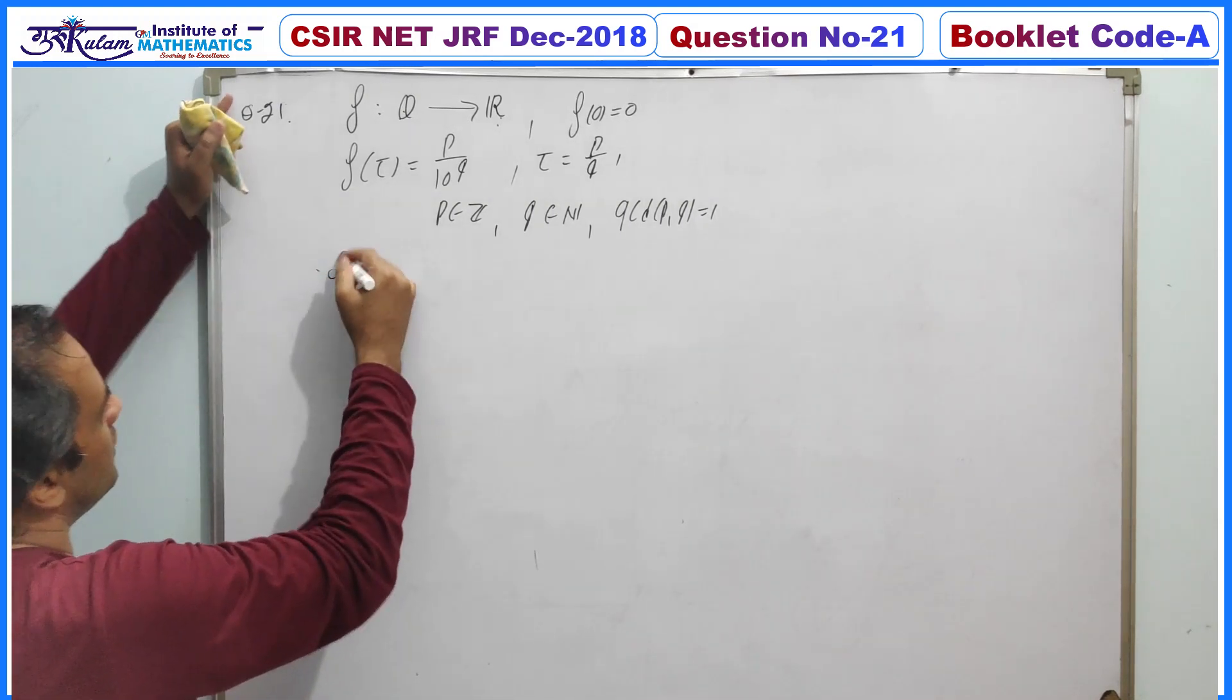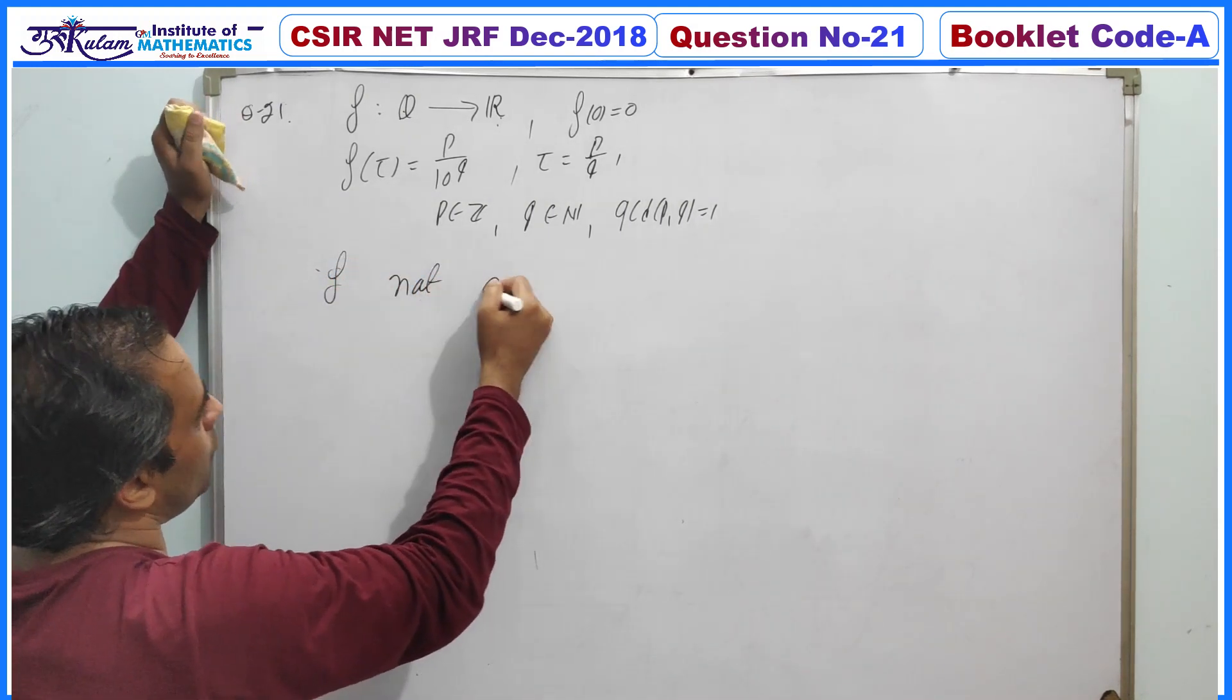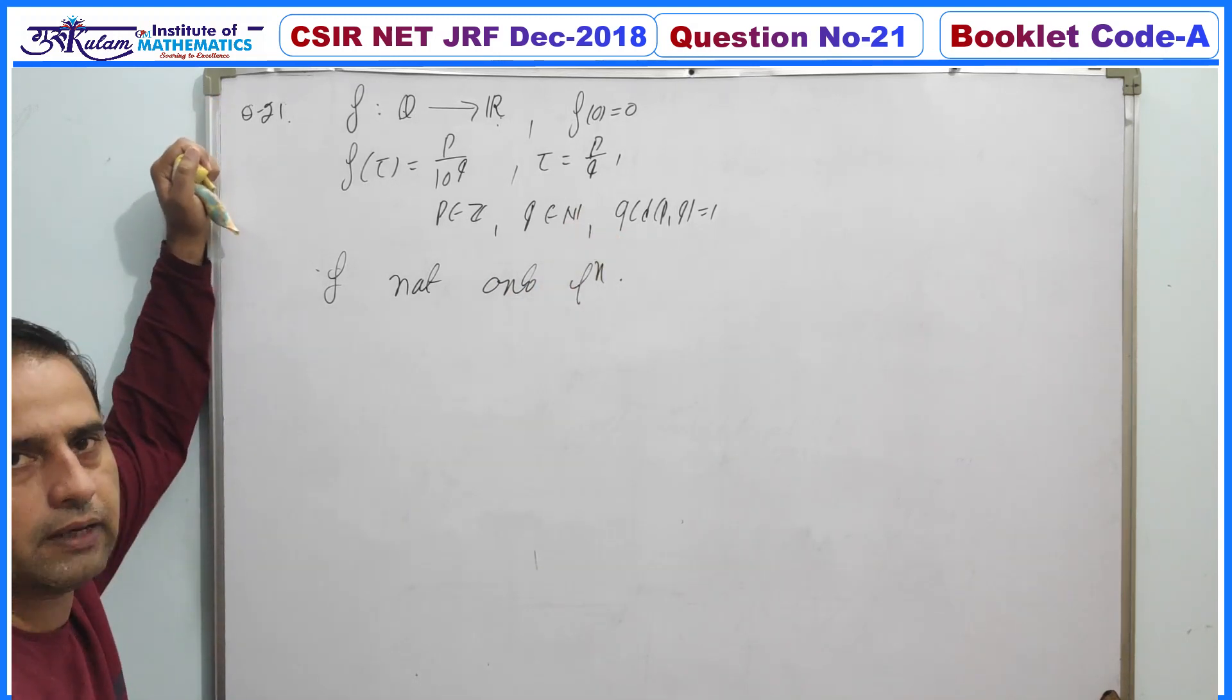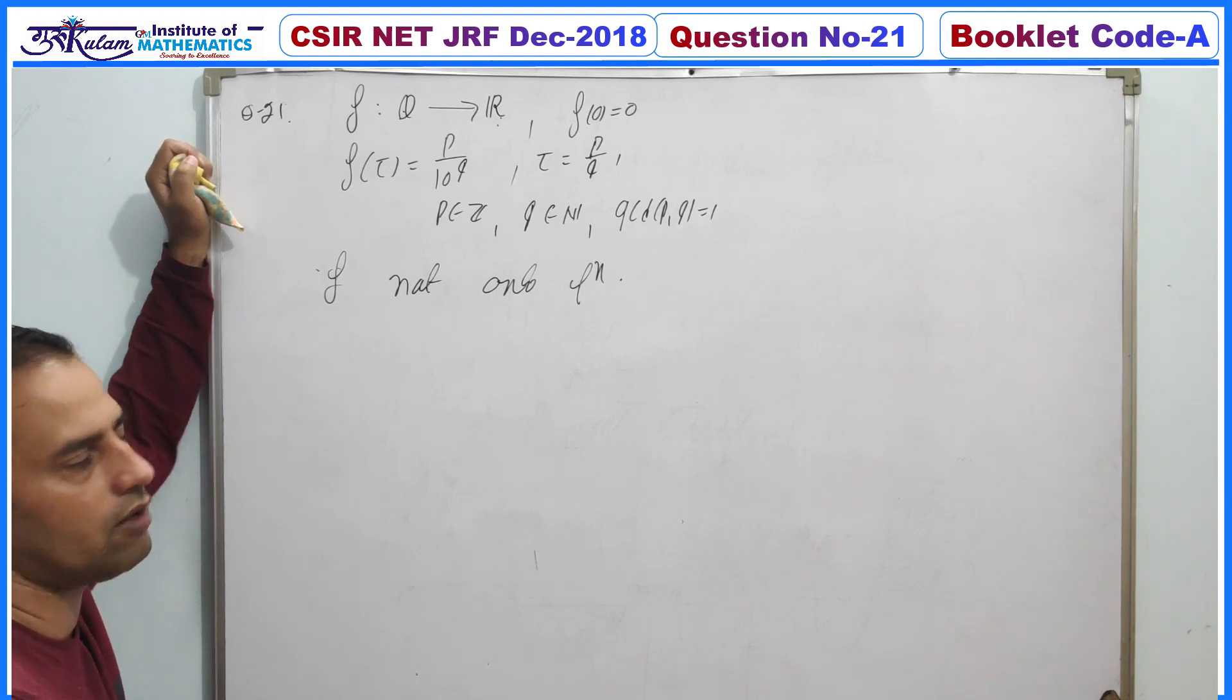So f is not onto. The reason is the cardinality of domain is countable and cardinality of codomain is uncountable.